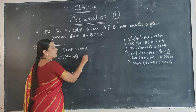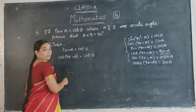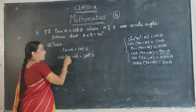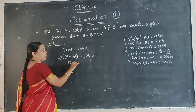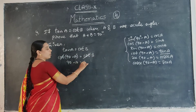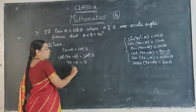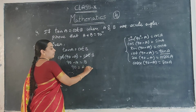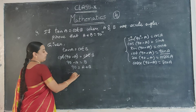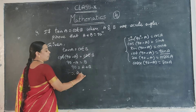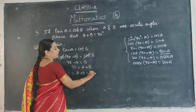This is equal to cos B on the right side. Now cos cancels on both sides, giving 90 minus A is equal to B. Now minus A moves to the right side as plus A. Therefore, A plus B is equal to 90. Hence proved.